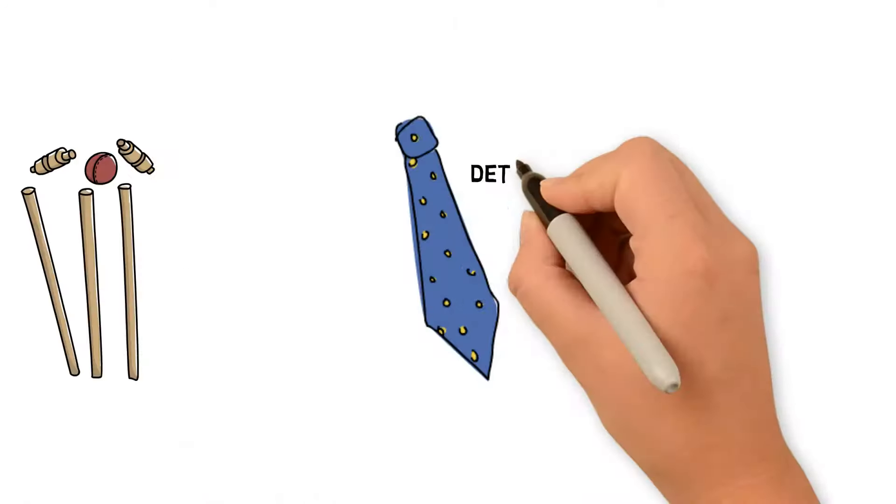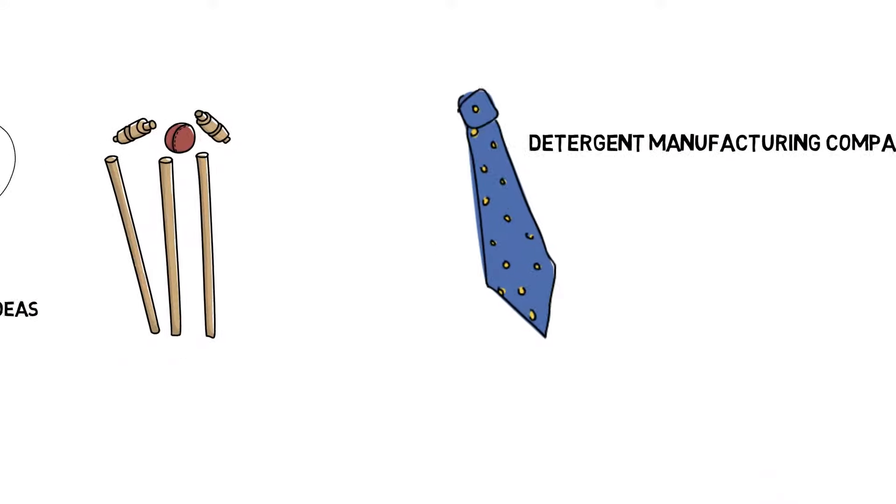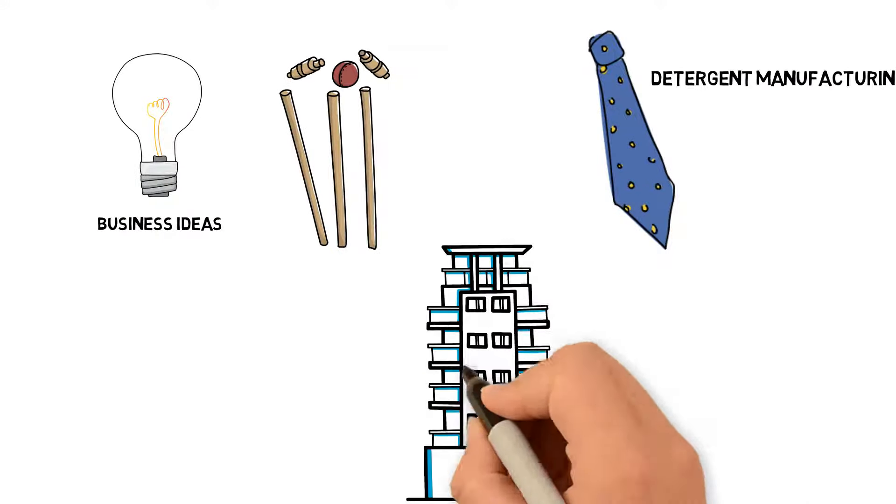Some succeeded, like the detergent manufacturing company the engineer parents established from the granny flat. It was a lot of hard work, but was paying the bills, at least most of the time.